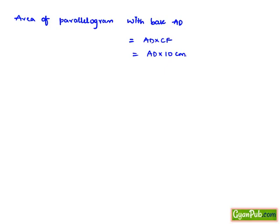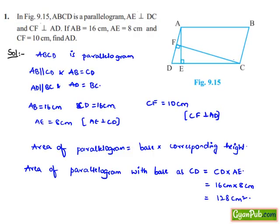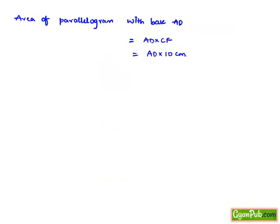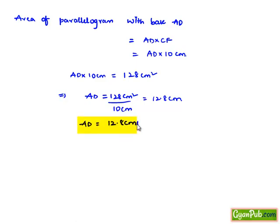Area obtained in both the cases must be equal since it is the area of the same parallelogram ABCD. That is, AD into 10 cm is equal to 128 cm square, which implies AD is equal to 128 cm square divided by 10 cm, which will be equal to 12.8 cm. Therefore, the length of side AD is 12.8 cm.